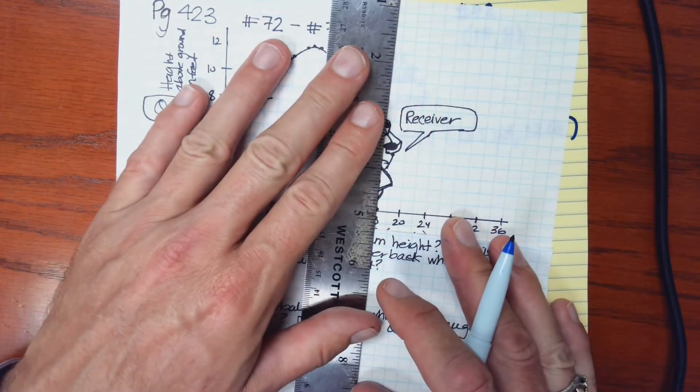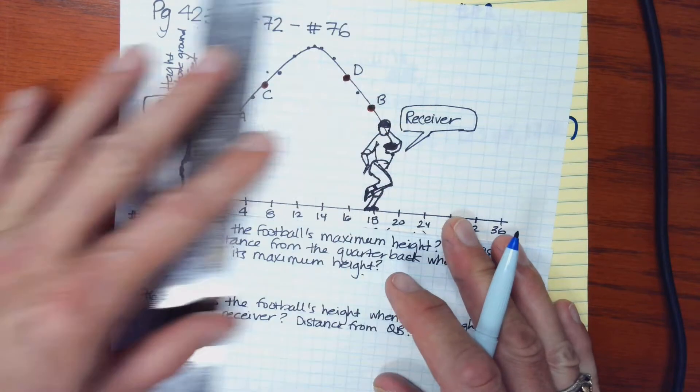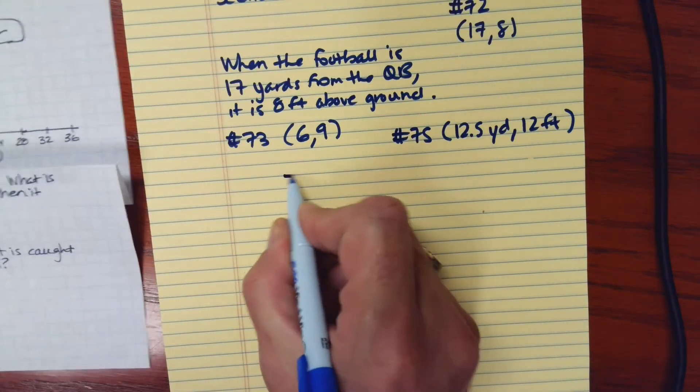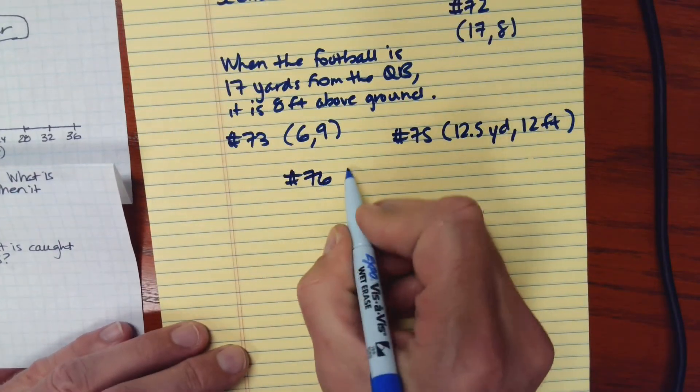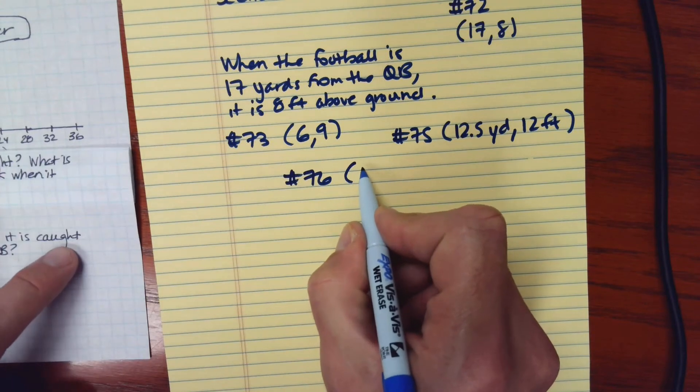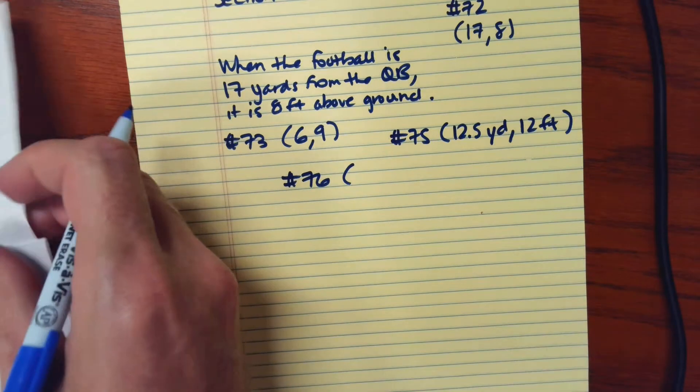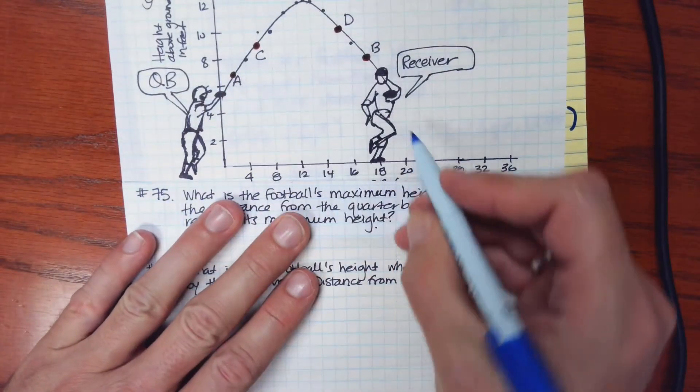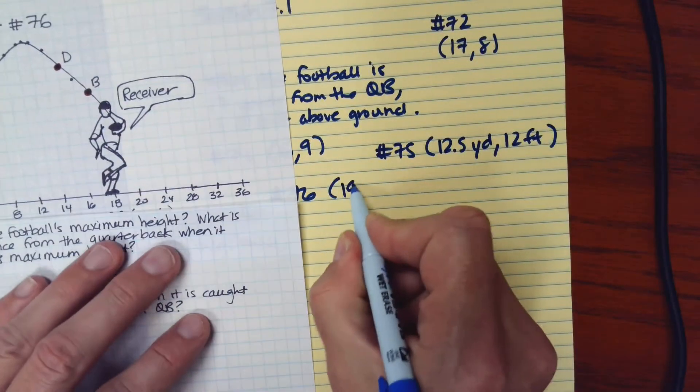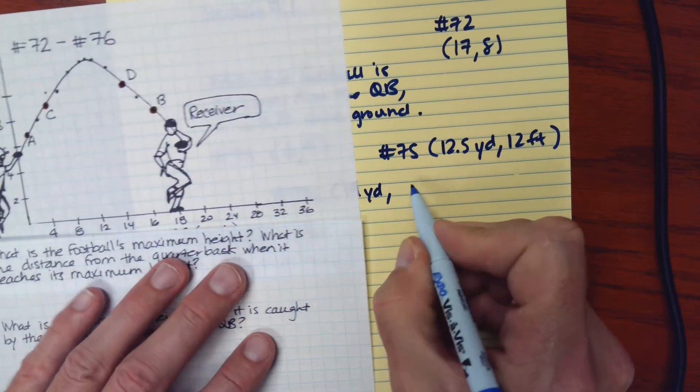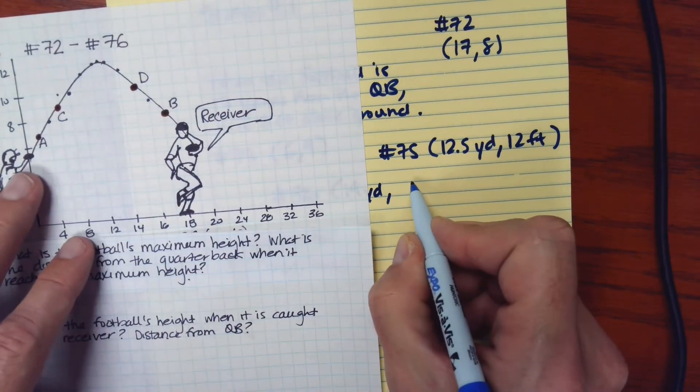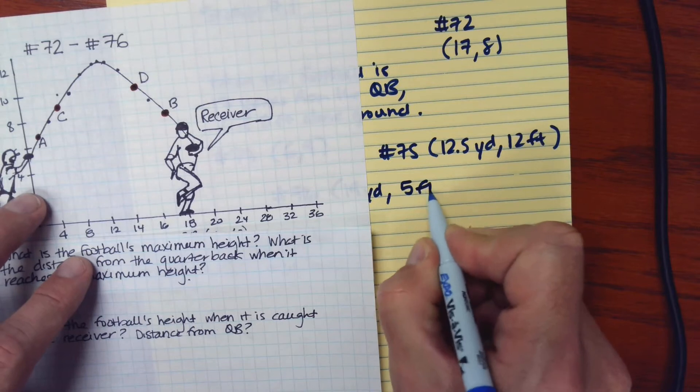And it looks like that's at 19 yards. So for number 76, we'll have, remember, the x-coordinate should go first. So I want to list the distance. So that would be the 19 yards. And then the height is 5 feet.